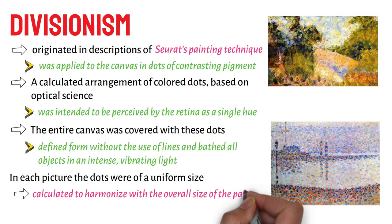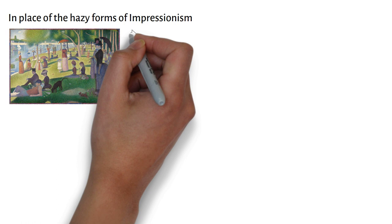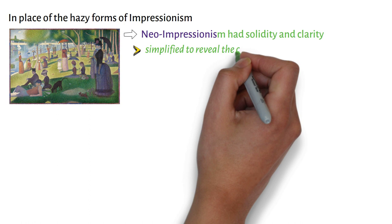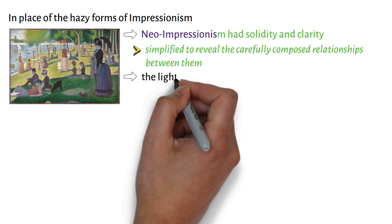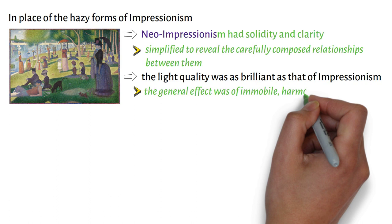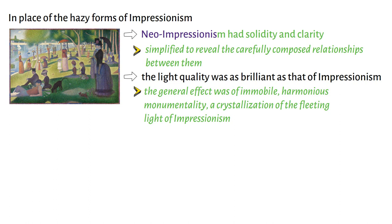In place of the hazy forms of Impressionism, those of Neo-Impressionism had solidity and clarity, and were simplified to reveal the carefully composed relationships between them. Though the light quality was as brilliant as that of Impressionism, the general effect was of immobile, harmonious monumentality — a crystallisation of the fleeting light of Impressionism.